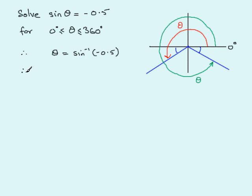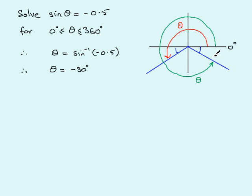On a calculator, the inverse sine of minus 0.5 gives minus 30°. Minus 30° might seem strange, but the minus sign indicates we're turning in the clockwise direction. Turning anticlockwise gives 90°, 180°, 270°, 360°, while clockwise gives minus 90°, minus 180°, etc. So minus 30° corresponds to this angle in the fourth quadrant, and I'll mark its magnitude as 30°.